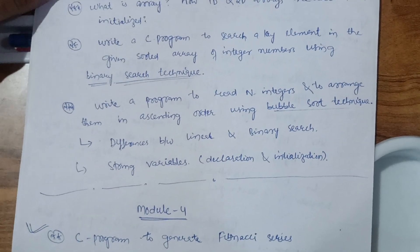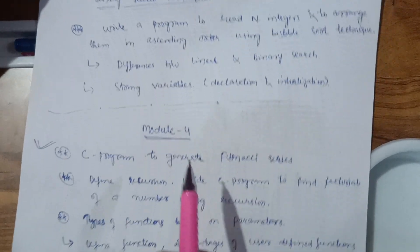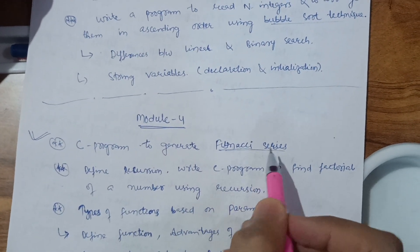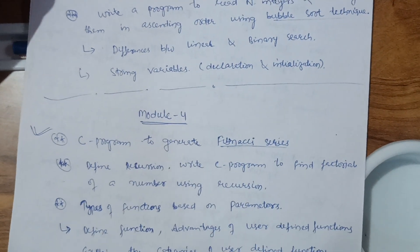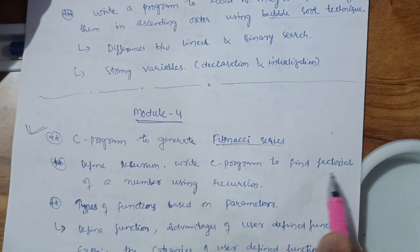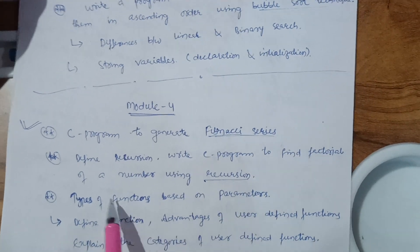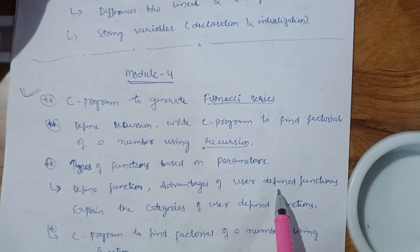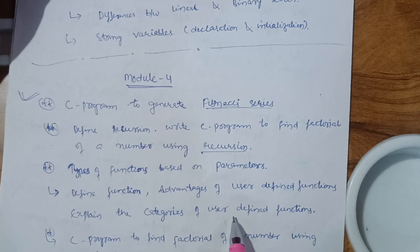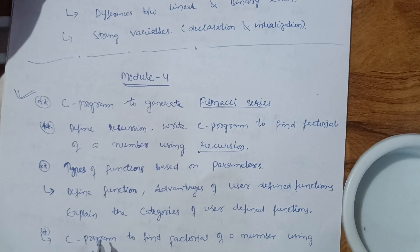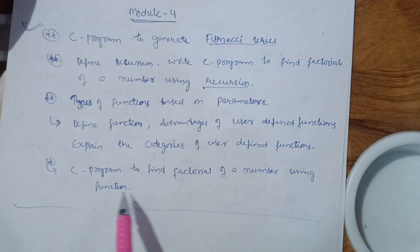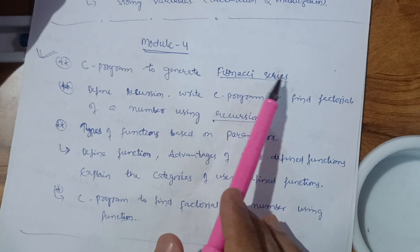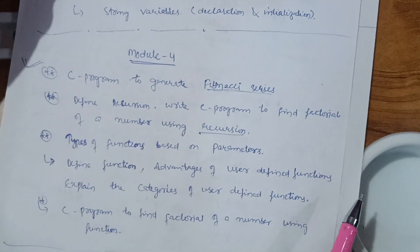In Module 4, write a C program to generate the Fibonacci series — this is an important question. Then: define recursion, write a C program to find the factorial of a number using recursion, define function and write its advantages, explain the categories of user-defined functions, and also write a C program to find factorial of a number using a function. Fibonacci series is always asked in the VTU examination.